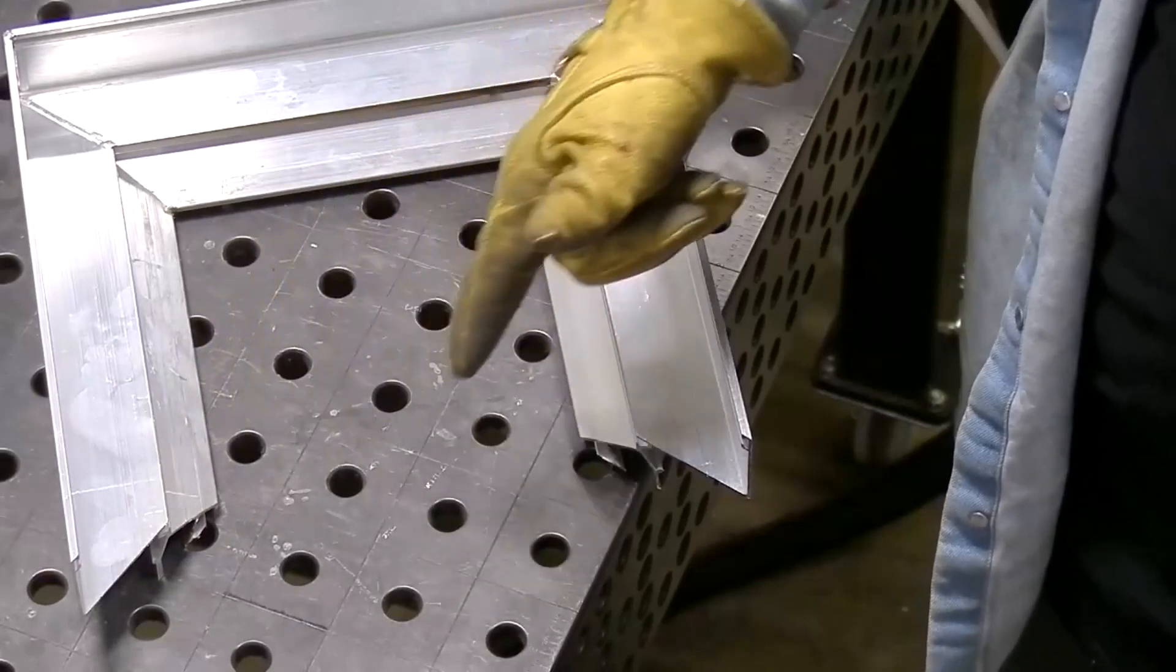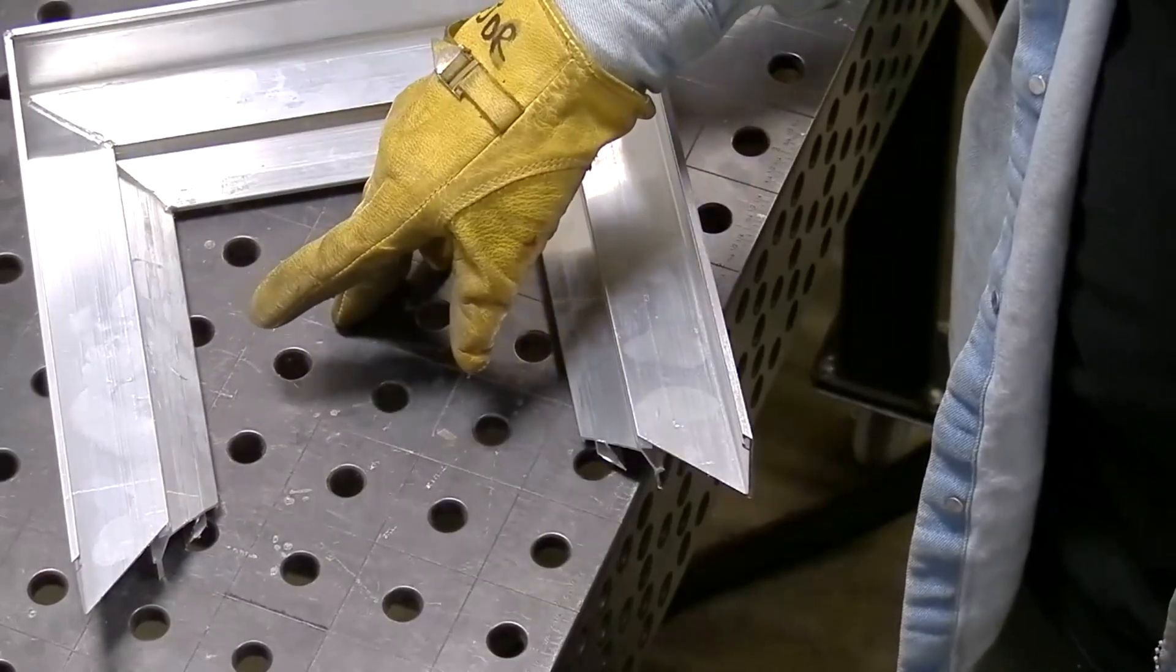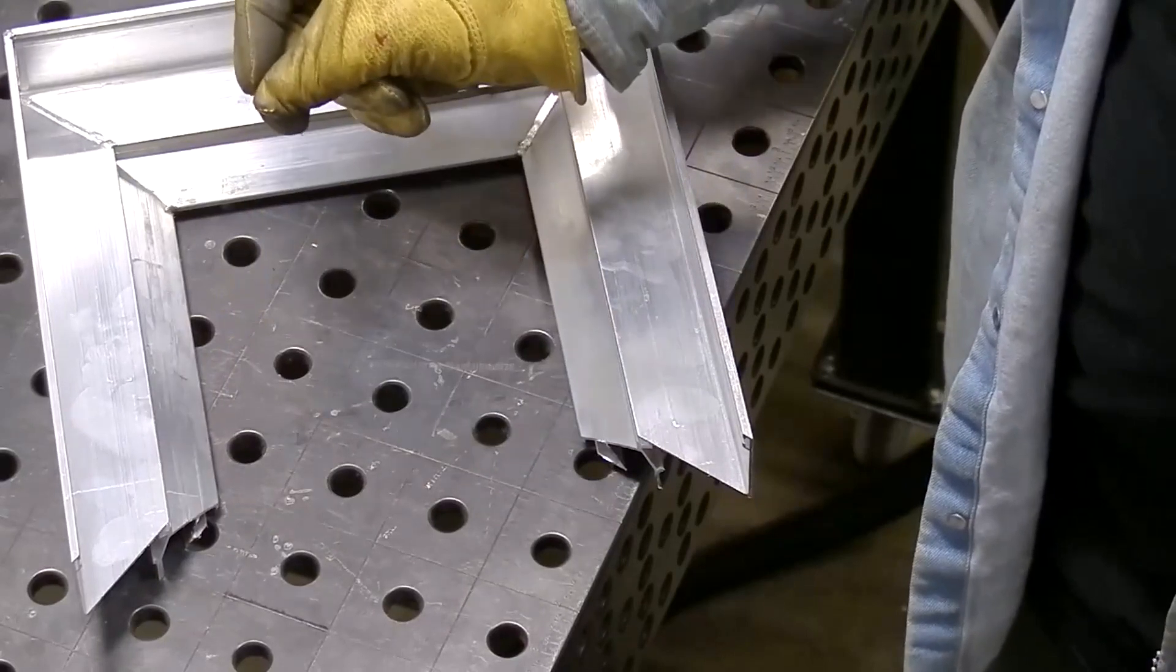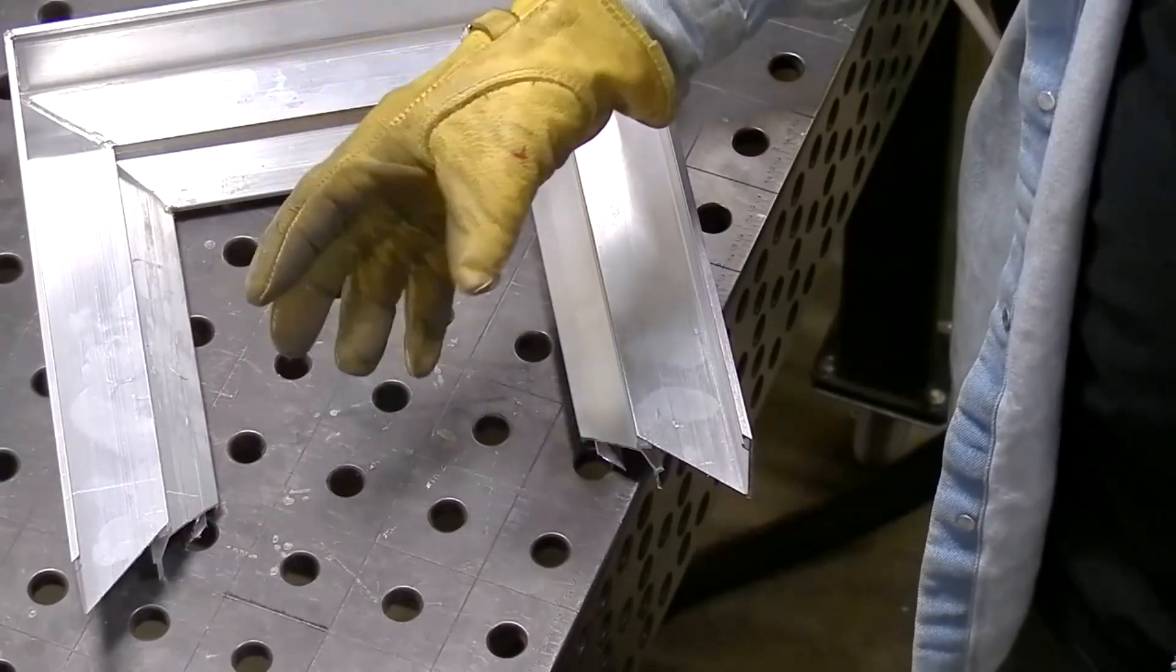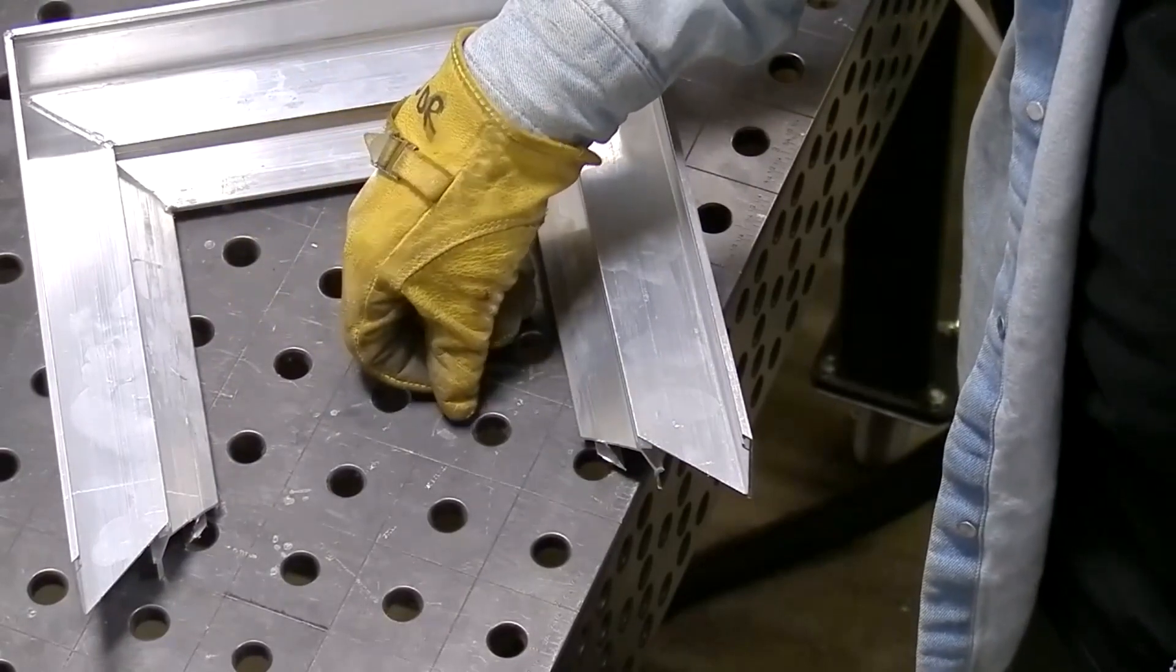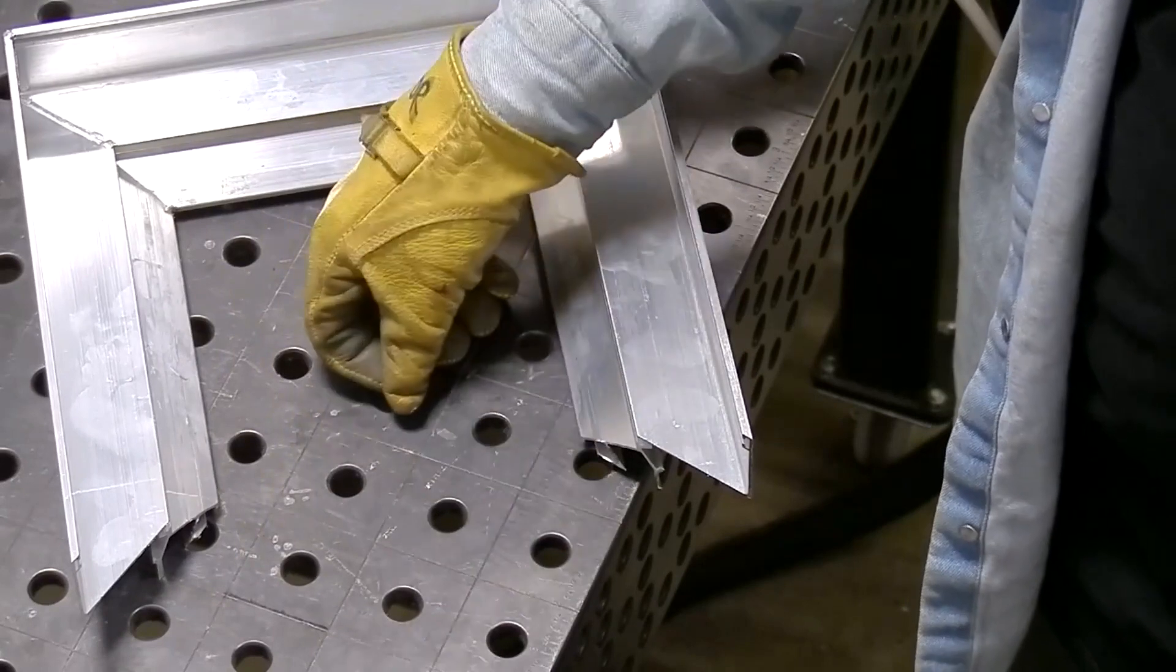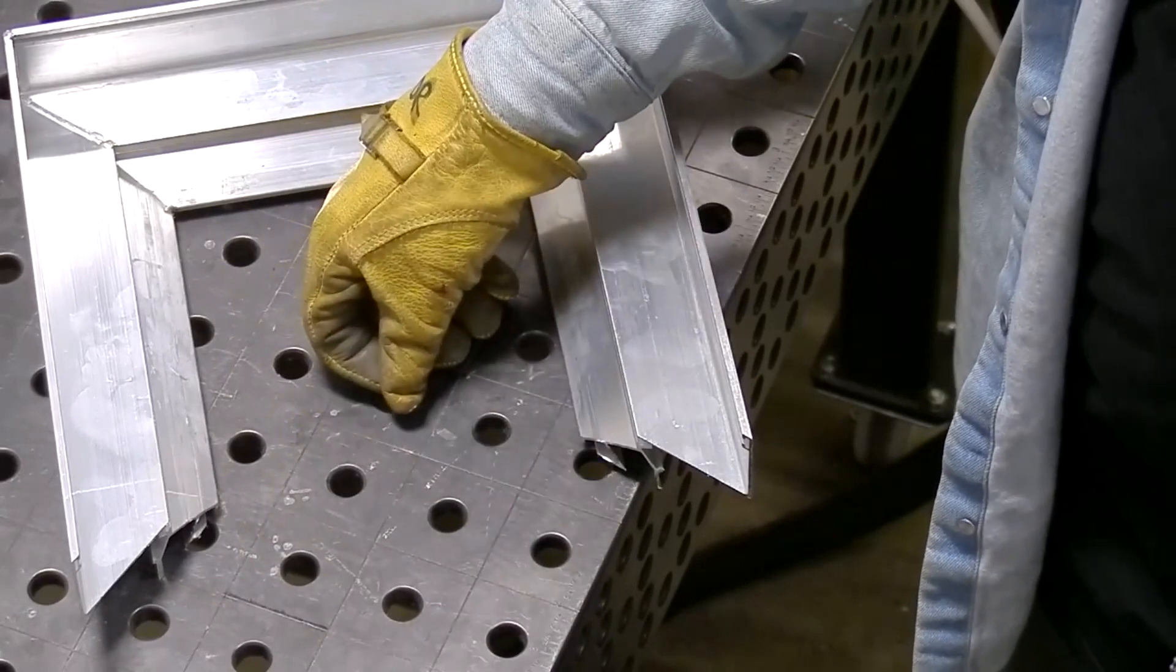TIG welders, the problem I see with them trying to do it is when you're TIG welding, your main goal is don't dip the tungsten. So touching the surface during a weld is a little bit foreign to TIG welders.